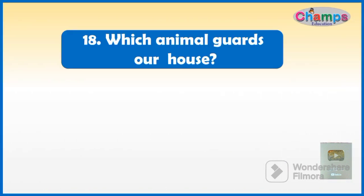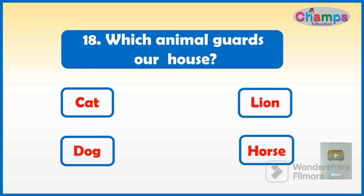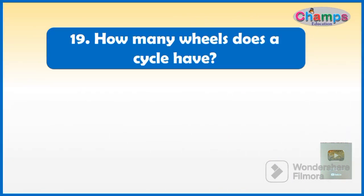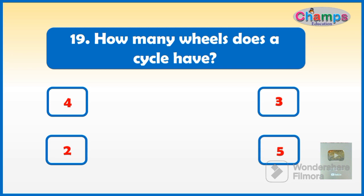Which animal guards our house? Options: Cat, Lion, Dog, or Horse. And your time starts now. How many wheels does a cycle have? Options: 4, 3, 2, or 5. And your time starts now.